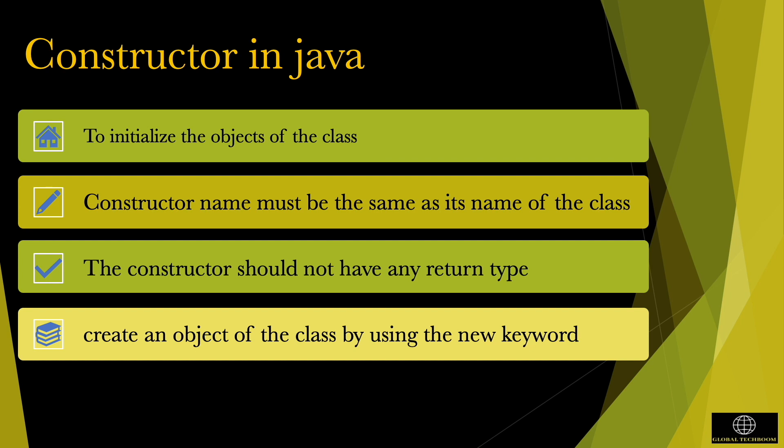If you don't define any constructor inside the class, the compiler automatically creates a default constructor at compile time. The constructor should not have any return type even void, because if there is a return type then JVM would consider it as a method not a constructor. When we create an object of the class by using the new keyword, a constructor is automatically called.